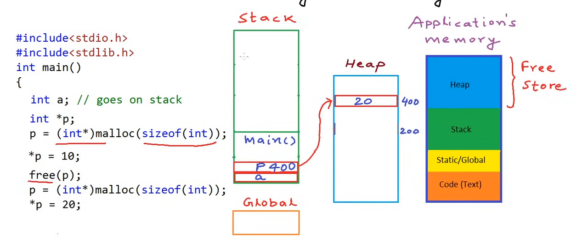It is the responsibility of the programmer to clear anything on the heap if it has been allocated and is not needed any further. Anything allocated on the heap is not automatically deallocated when the function completes like on the stack, and we can control when to free or deallocate anything on the heap.